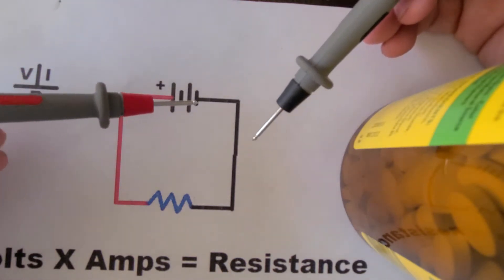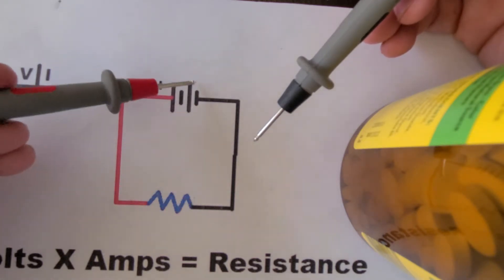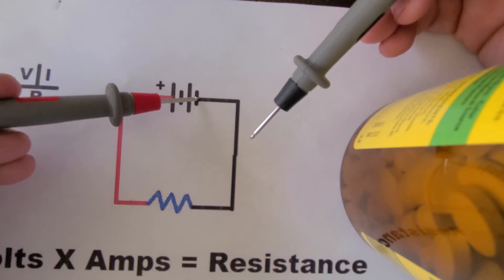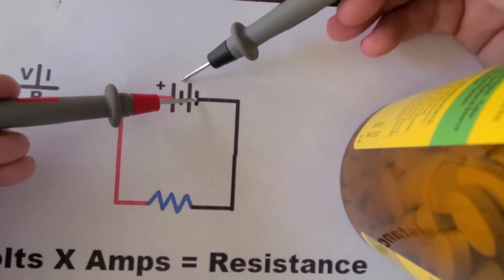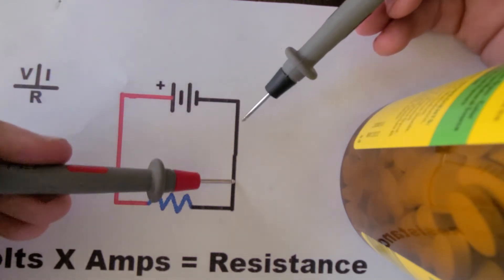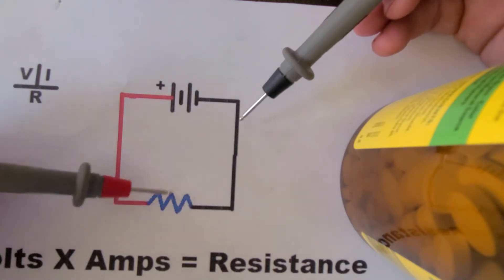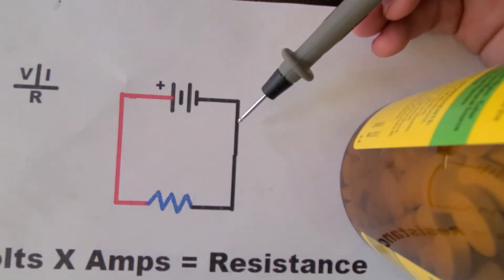So if I have a bad connection here on my battery terminal, that will drop, that will take off some of the voltage and won't let all the voltage get to your electronics in your car. Same goes if there's a bad connection anywhere else.